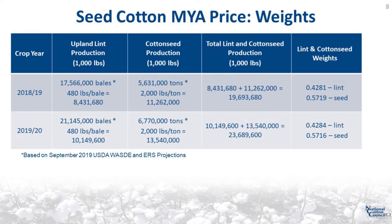To calculate the lint weight, U.S. upland lint production is divided by total lint and cotton seed production for the marketing year. To calculate the cotton seed weight, U.S. cotton seed production is divided by total lint and cotton seed production. For the 2018-19 crop year, the estimated lint weight is 0.4281 and the estimated cotton seed weight is 0.5719. For the 2019-20 crop year, the estimated weights using the September 2019 WASDE projections are 0.4284 for lint and 0.5716 for cotton seed.